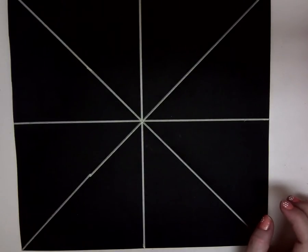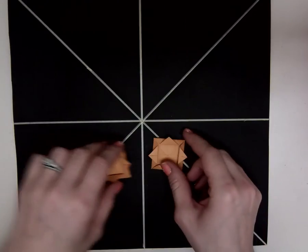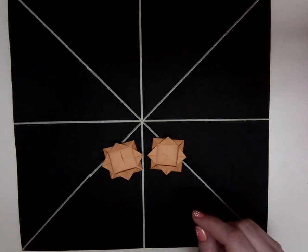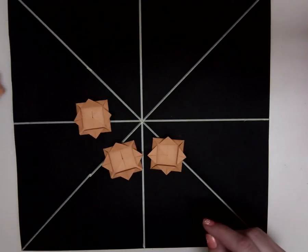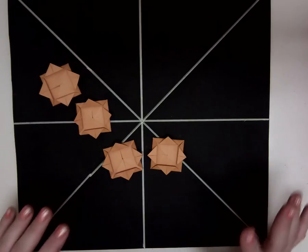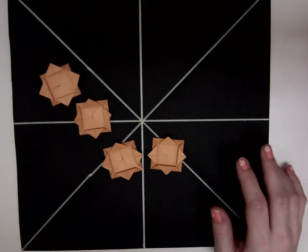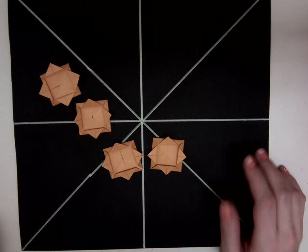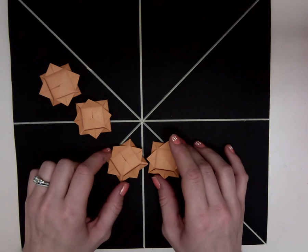Okay, so once you have at least one set of origami pieces done, if you just have one or if you have more than that, then you can begin to glue them down. You can wait till you have more done or you can just go ahead and start right away.